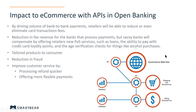By driving volume of bank payments, retailers will be able to reduce or even eliminate transaction fees, and there will be more tailored products for customers. As third parties plug into the existing data, services can be tailored more specifically to individual consumers. You might also see improved customer service — processing things like refunds more quickly and offering more flexible ways to pay. This gives a high-level overview of what the infrastructure might look like, with an e-commerce website interacting with different micro-services or fintech service providers.